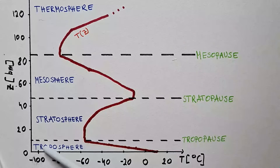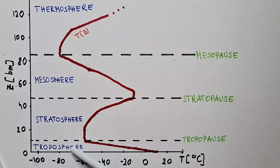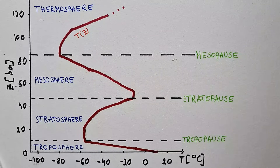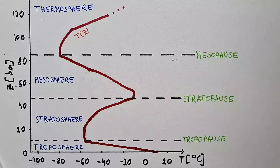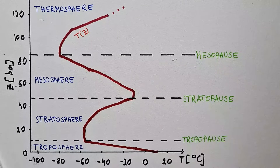The first layer in the atmosphere is called the troposphere. Almost all weather that is of importance for us takes place in the troposphere — storms, clouds, hurricanes, precipitation, that is all in the troposphere. In the troposphere, temperature decreases linearly with height. Linearly means straight line.